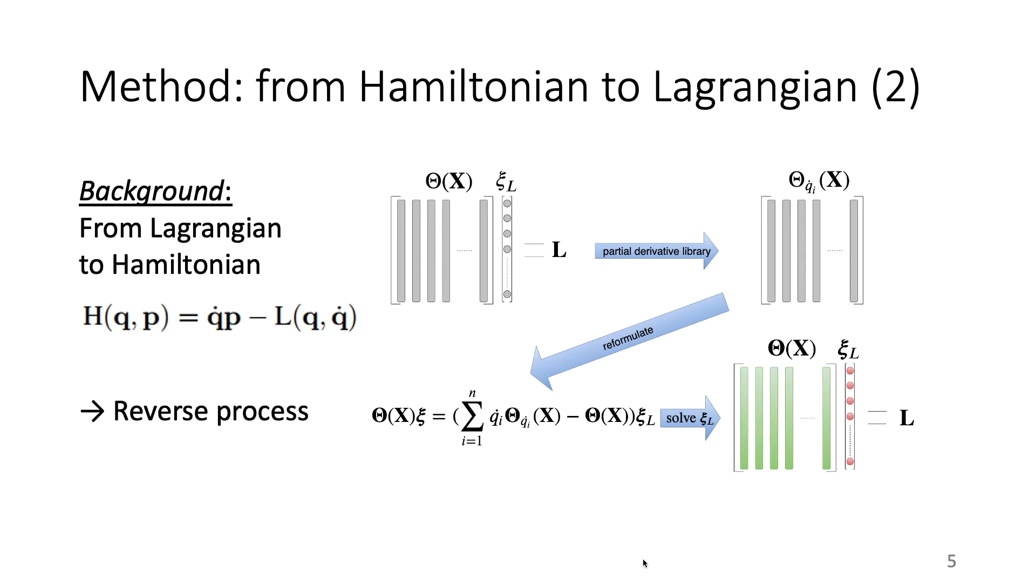Now I would like to show how to calculate the Lagrangian from the Hamiltonian. Under certain conditions, the total energy and the Hamiltonian coincide. Generally, for popular mechanical systems in the field of robotics, these conditions are satisfied if the effect of friction is neglected. Therefore, we assume the total energy to be the Hamiltonian in this research.